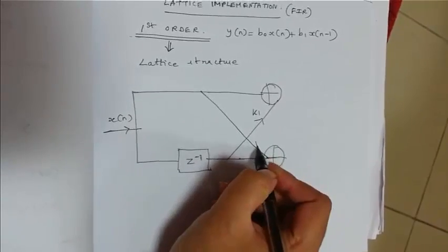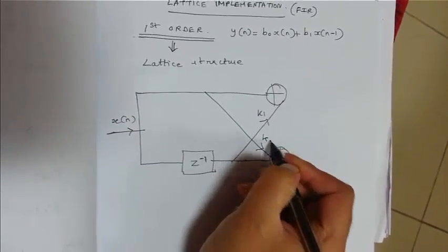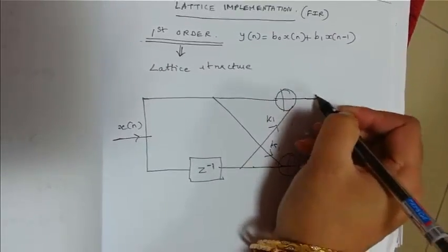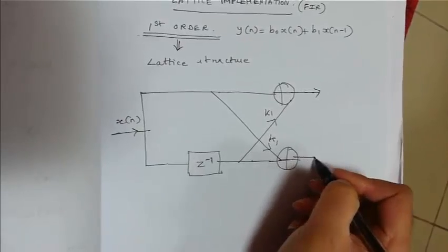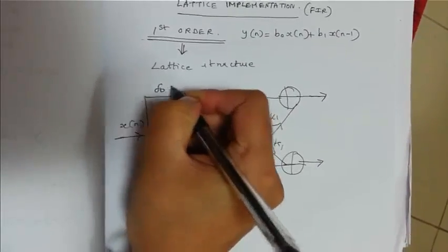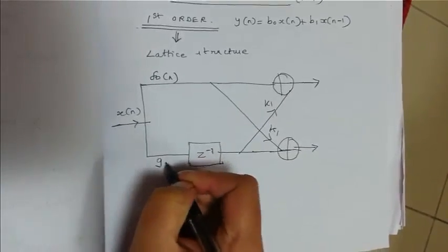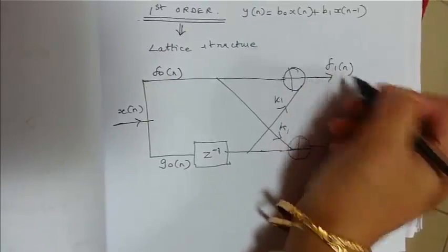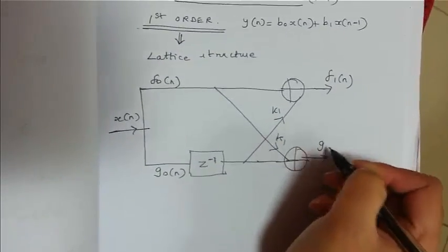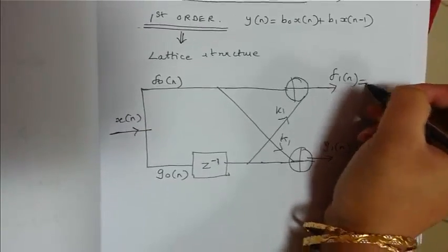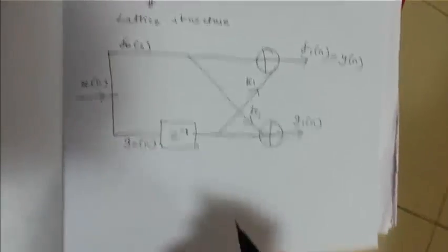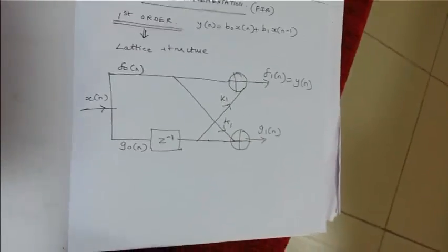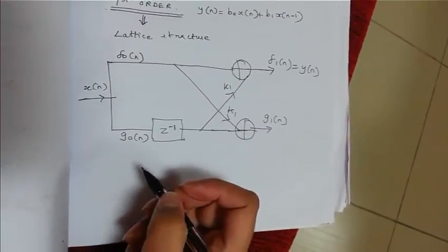Now the K1 is called as reflection coefficients for the lattice form. And what is the advantage of lattice structure? It is the fastest. Now you have F0 of N, G0 of N here, and this is F1 of N, and this is G1 of N. And F1 of N is nothing but output. So F0 of N and G0 of N is equal to X of N.